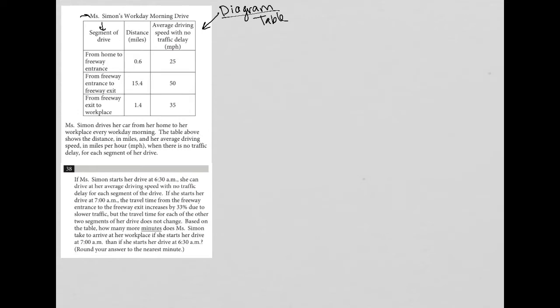The first column shows the segment of drive: home to freeway entrance, freeway entrance to freeway exit, and freeway exit to workplace. Each segment has a set distance in miles and an average speed.